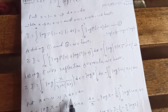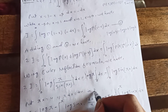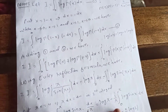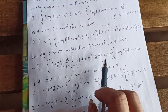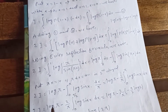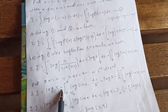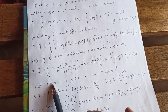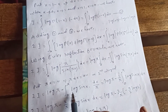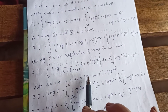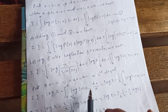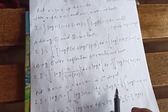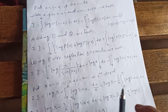Now putting πx equal to u, so π dx equals du, applied to the second integral. When x is 0, u is 0; when x is 1, u is π. So 2I equals log(π) times 1 (since the first integral from 0 to 1 dx is just 1), minus 1 over π times the integral from 0 to π of log(sin(x)) dx.